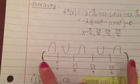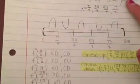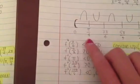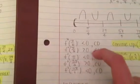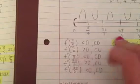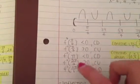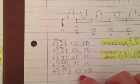Set up a number line with the closed interval from 0 to 2 pi and test a value between each pair of points. Between 0 and pi over 4, use pi over 6 — less than 0, concave down. Between pi over 4 and 3 pi over 4, use pi over 2 — greater than 0, concave up. Between 3 pi over 4 and 5 pi over 4, use pi — less than 0, concave down. Between 5 pi over 4 and 7 pi over 4, use 3 pi over 2 — greater than 0, concave up. Between 7 pi over 4 and 2 pi, use 11 pi over 6 — less than 0, concave down.